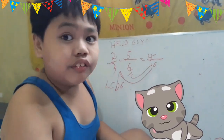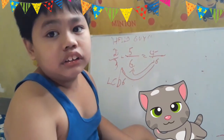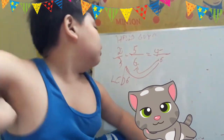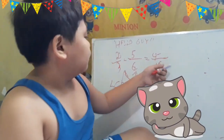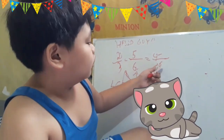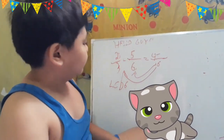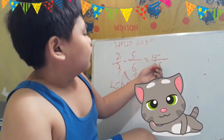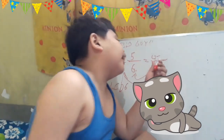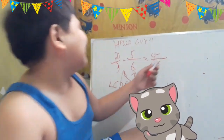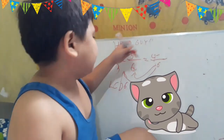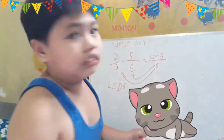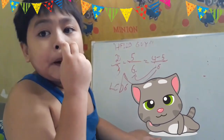Six divide three is two. Two. Then two times two is four. Three divide six is one. One times five is five. And the operation to be used is subtraction.